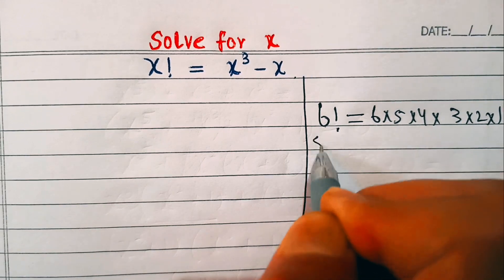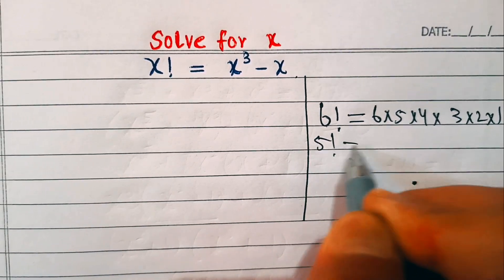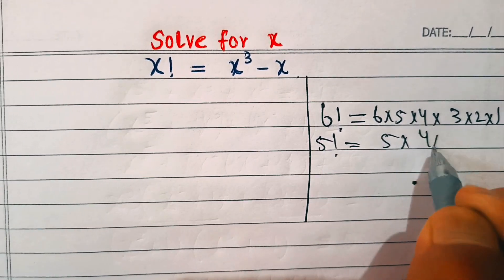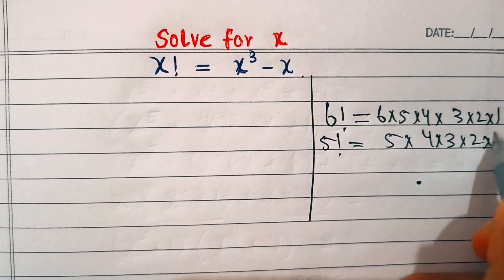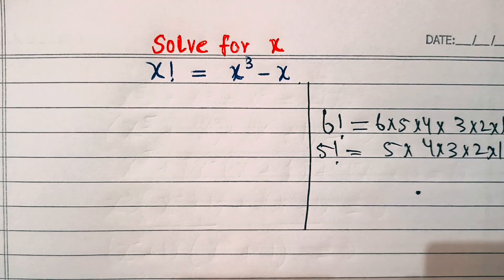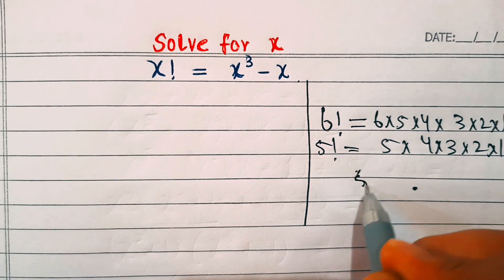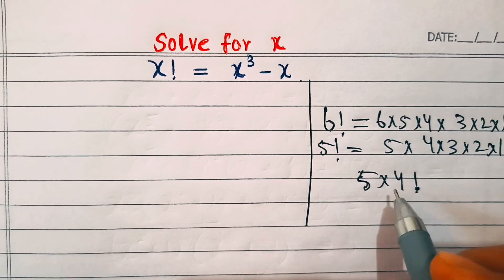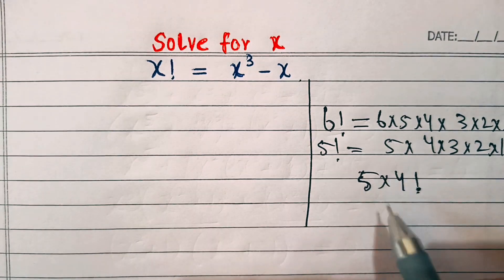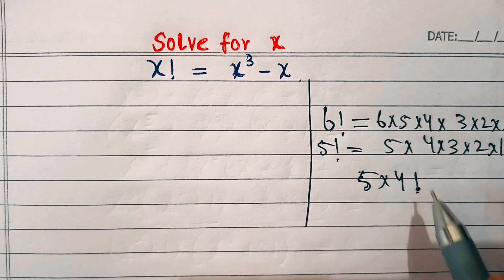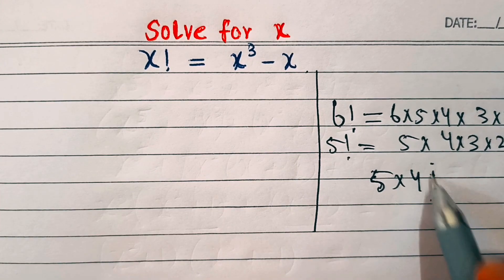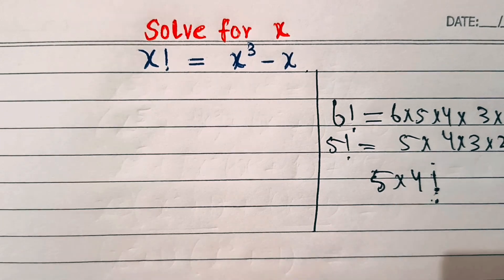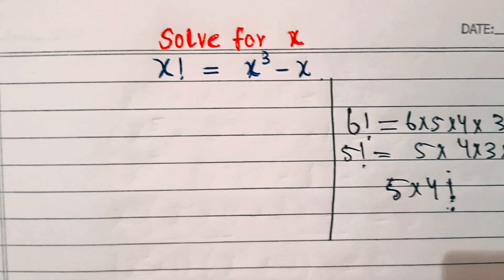Into one. Similarly, five factorial is five into four into three into two into one. Note that it's not necessary to drag the multiplication all the way to one — we can also write five factorial as five into four factorial, stopping at any number, but we show the factorial symbol at the end of that number.